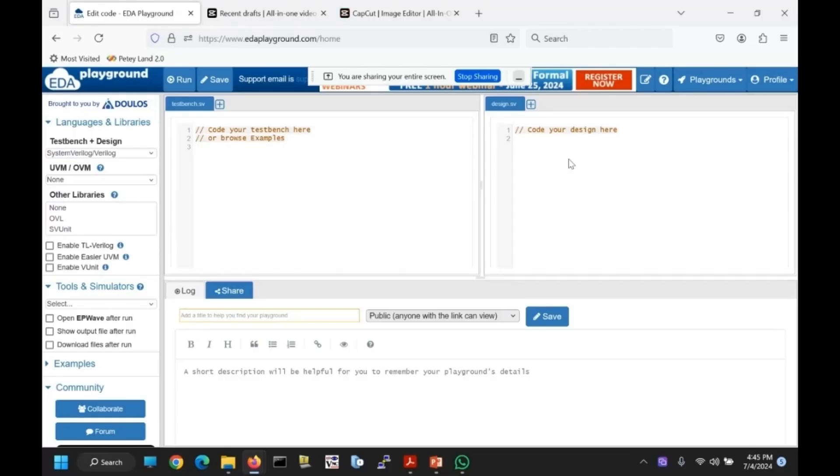Now I am going to show you how to write Verilog code for 2x1 multiplexer by using data flow modeling. First, let's start with module mux 2x1. What are the inputs? Input I0, I1, S output y.